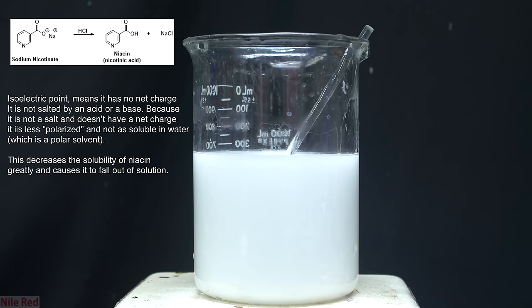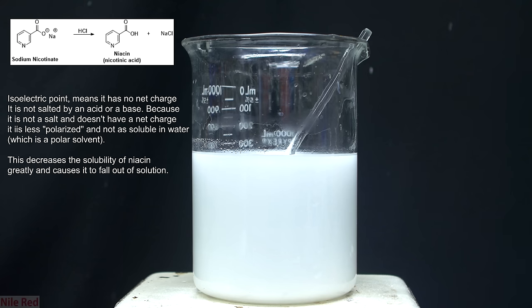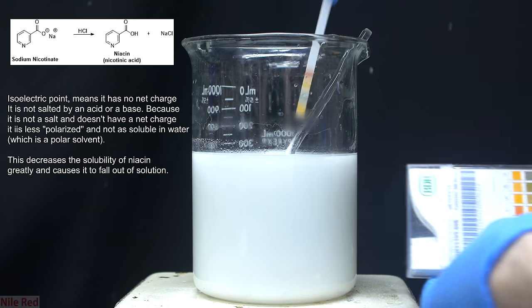The isoelectric point is basically the pH at which a specific molecule carries no net charge. In the case of niacin, this point is at a pH of around 4.75, and at this point, it should be the least soluble in water.